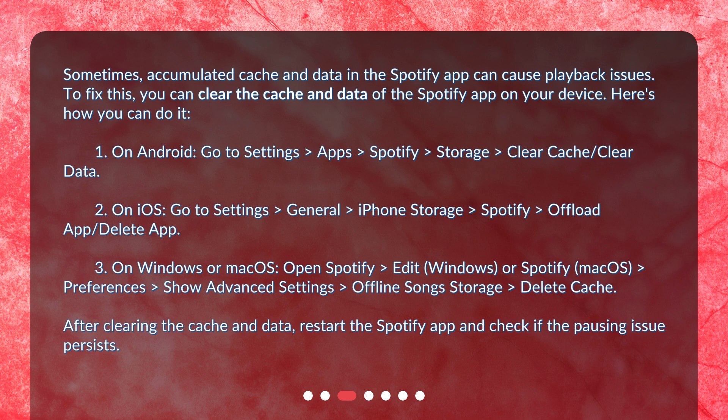On iOS, go to Settings > General > iPhone Storage > Spotify > Offload App > Delete App. On Windows or macOS, open Spotify, then go to Edit (Windows) or Spotify (macOS) > Preferences > Show Advanced Settings > Offline Songs Storage > Delete Cache.